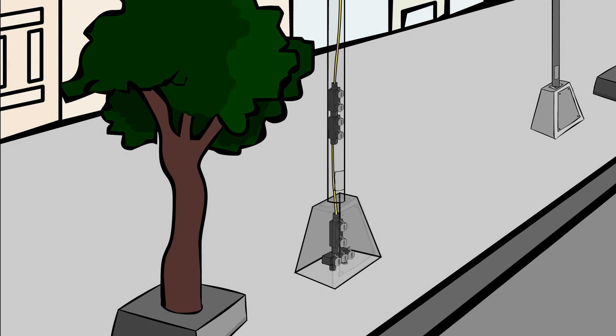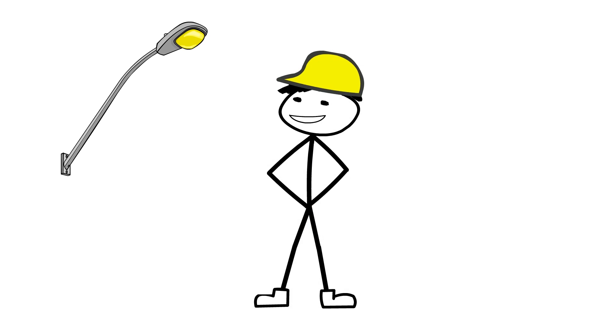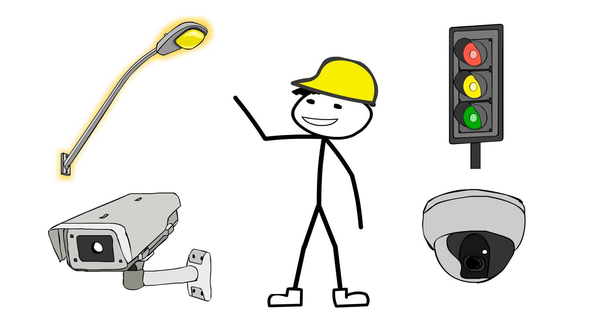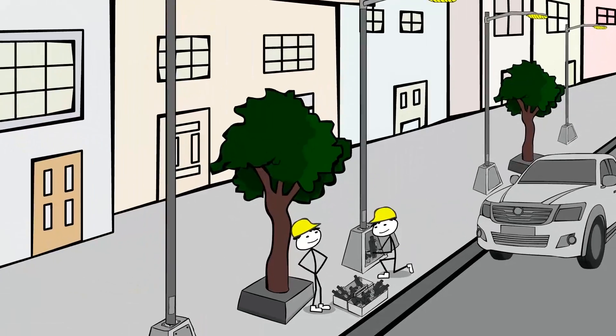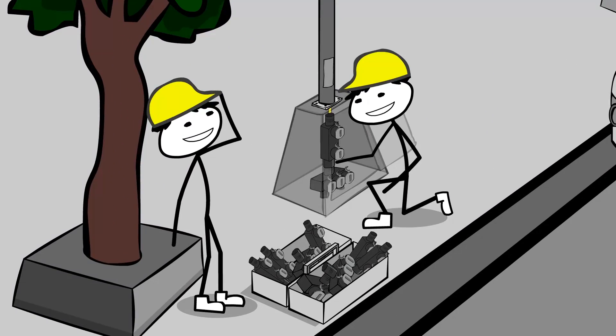The ILSCO Streetwise Connector is easy to install into new and existing streetlights. Our modular approach allows configurations for many applications, including lights and traffic cameras. There are few limits to the ways you can configure and install the ILSCO Modular Streetwise Connector.